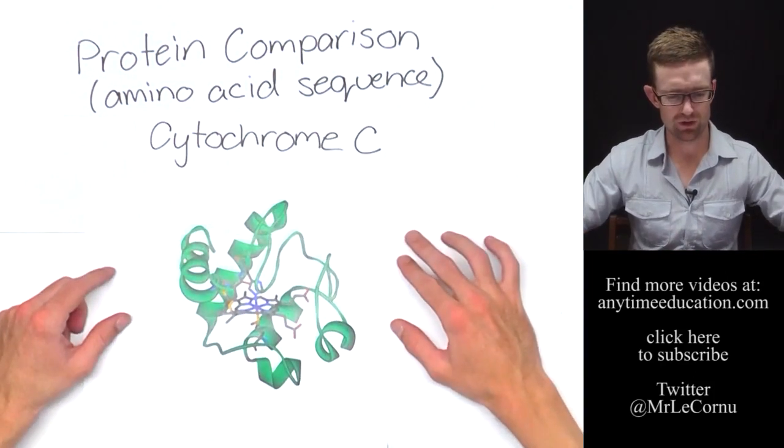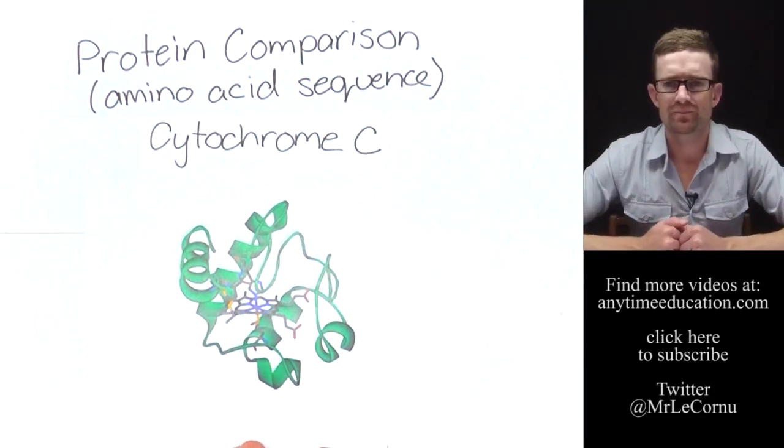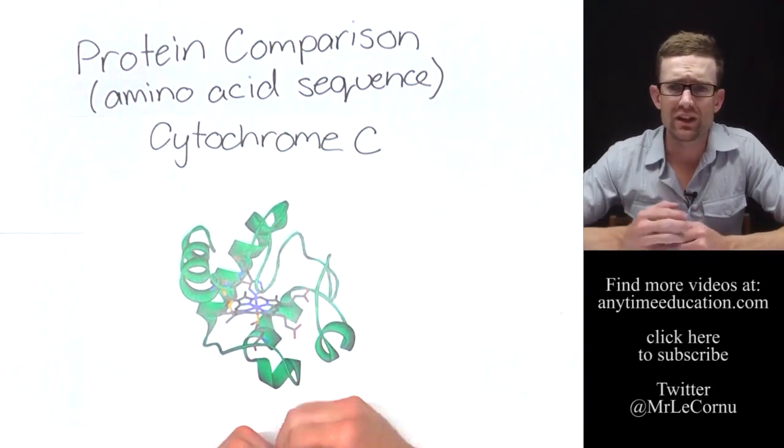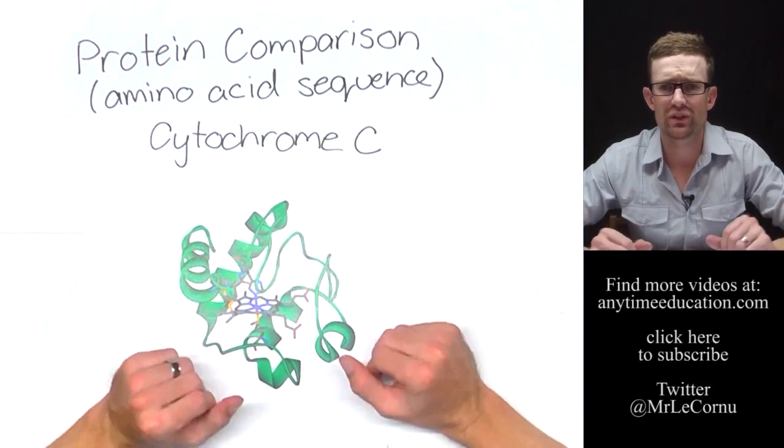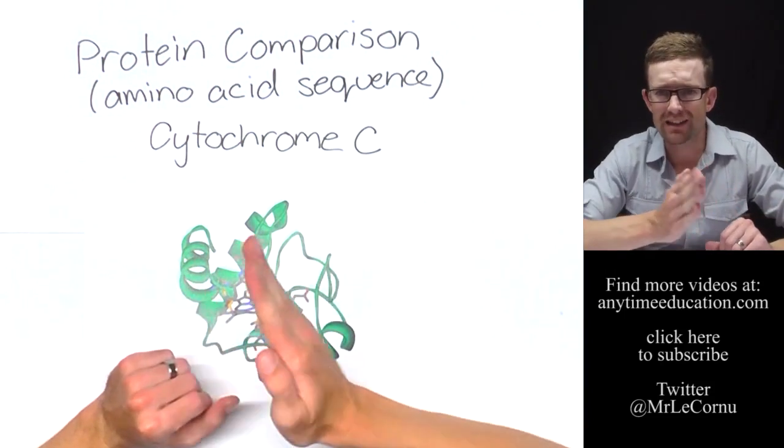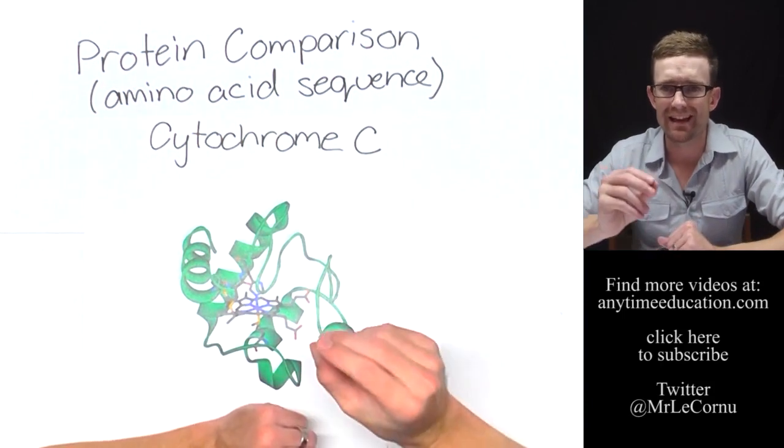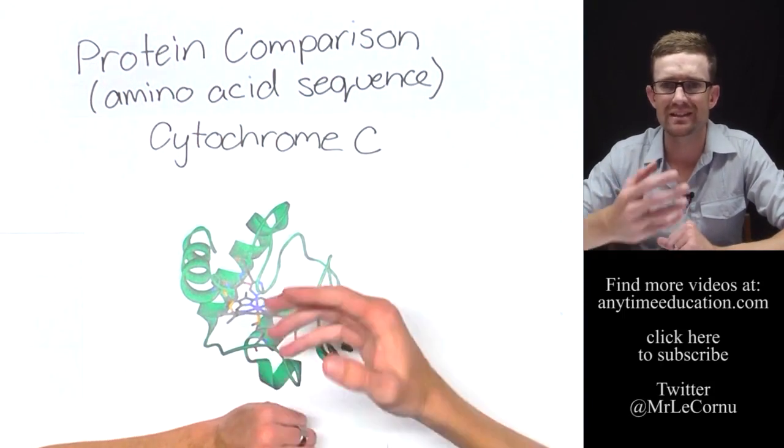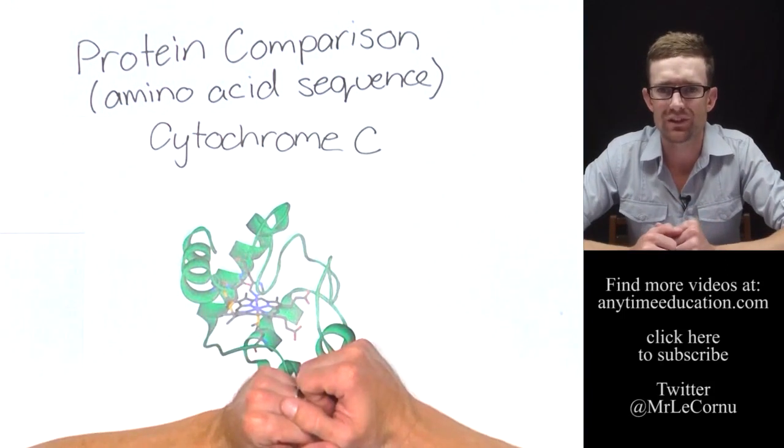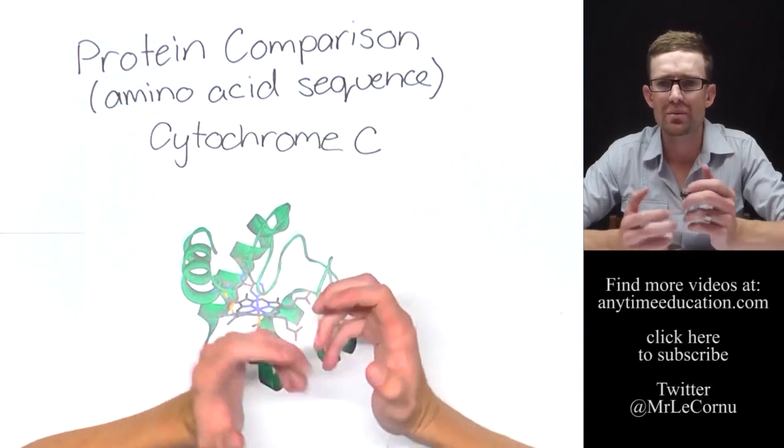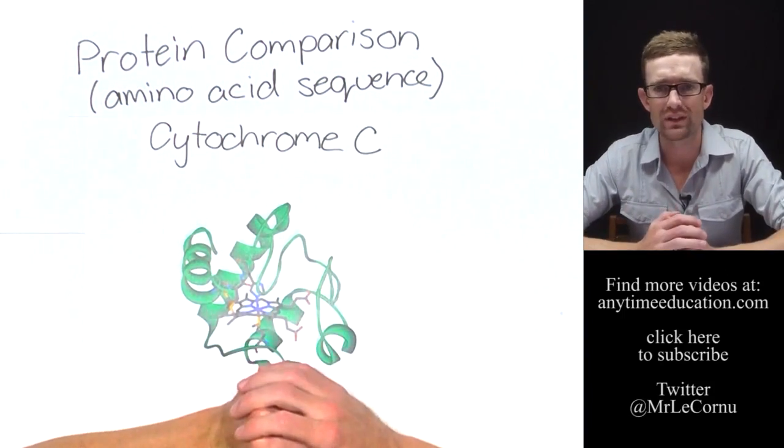Here's a picture of the cytochrome C protein. And what we do is we take the cytochrome C protein from two different species, analyse the sequence of amino acids, and because we understand that that sequence of amino acids is dictated by the sequence of bases on the DNA, we're able to determine how similar or different the DNA is between two species.